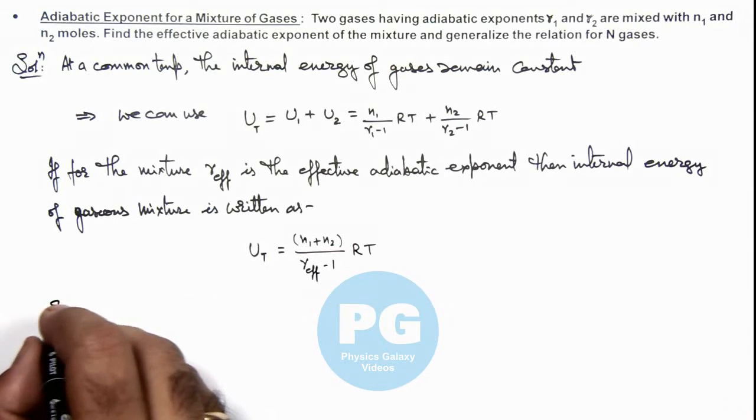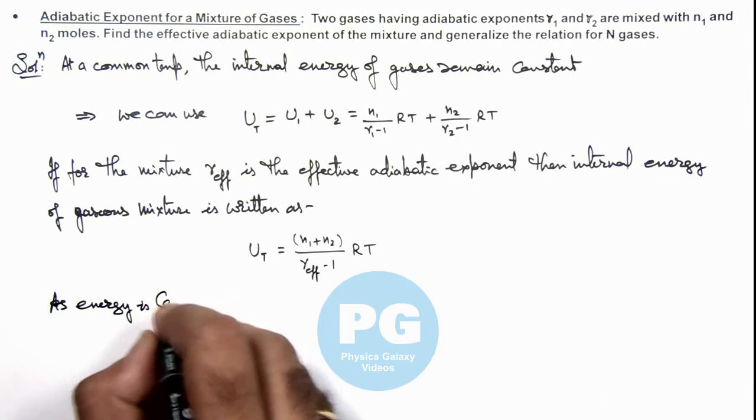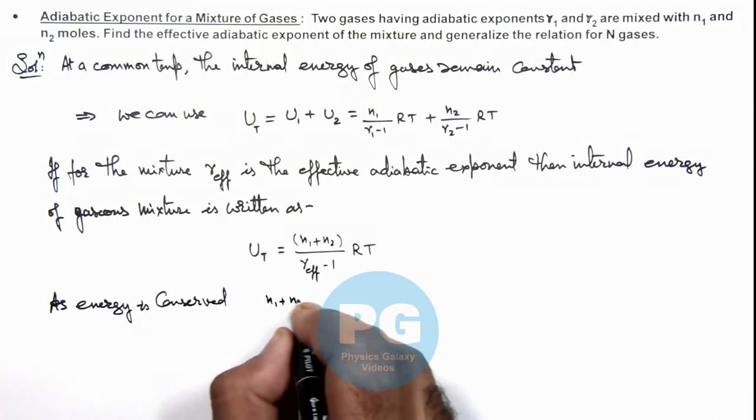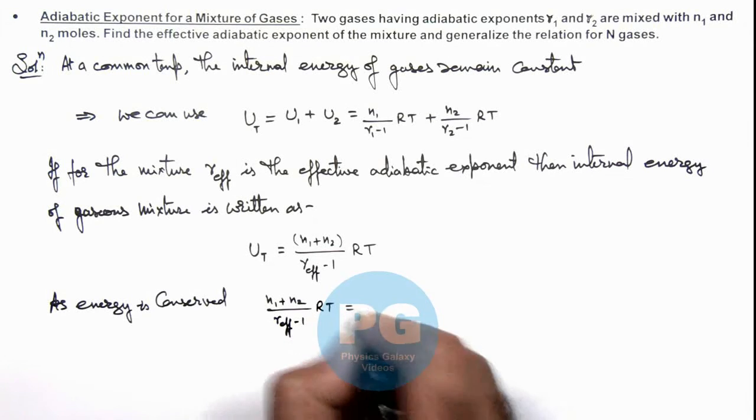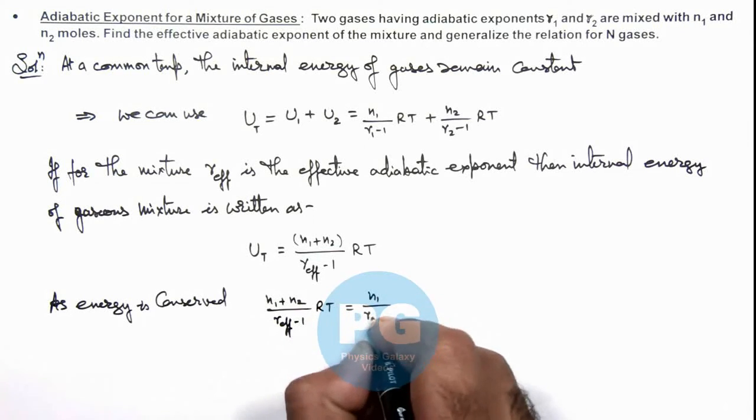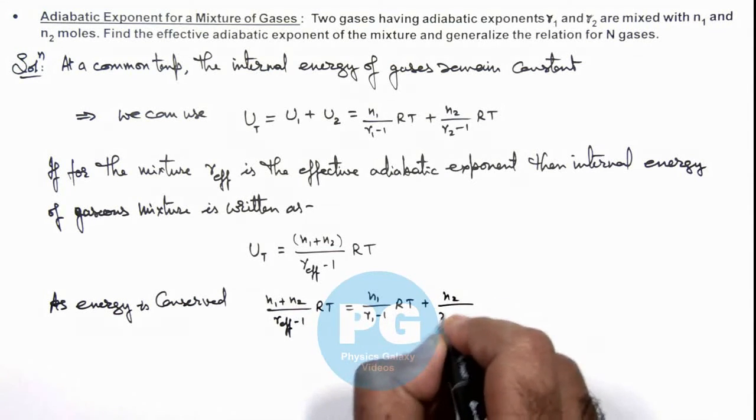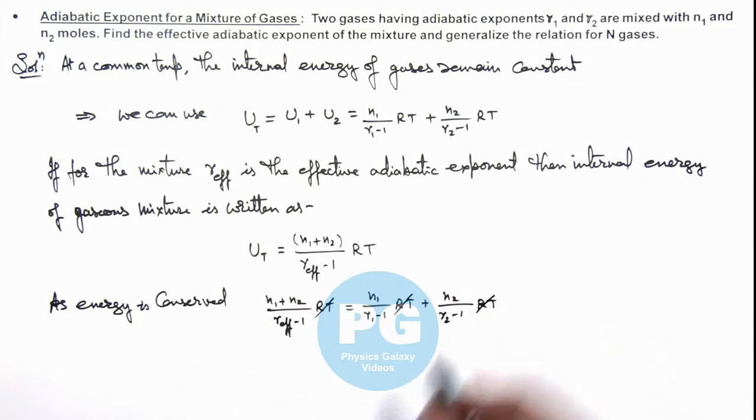As energy is conserved, we can write (n1 plus n2) by (gamma effective minus 1) times R T equals n1 by (gamma 1 minus 1) times R T plus n2 by (gamma 2 minus 1) times R T. Here R T gets cancelled out and we get a relation: (n1 plus n2) by (gamma effective minus 1) equals n1 by (gamma 1 minus 1) plus n2 by (gamma 2 minus 1). From this relation we can calculate the value of gamma effective directly.